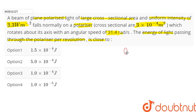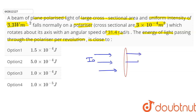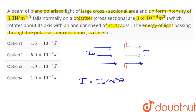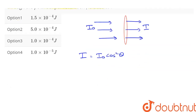If we have a polarizer and plane polarized light is incident on it with intensity I₀, then the intensity of light coming out of the polarizer is I, and the relation between I and I₀ is given by Malus's Law: I = I₀cos²θ, where θ is the angle.